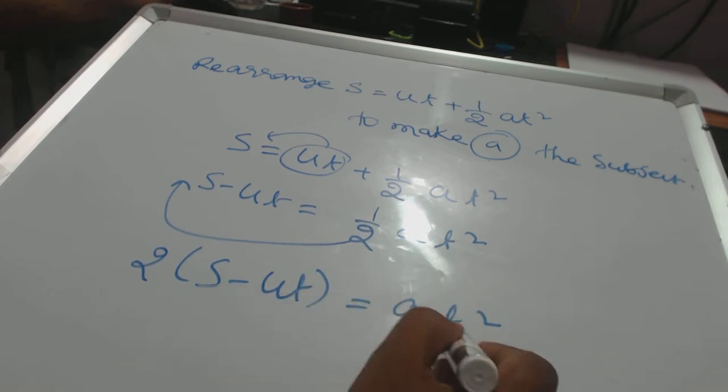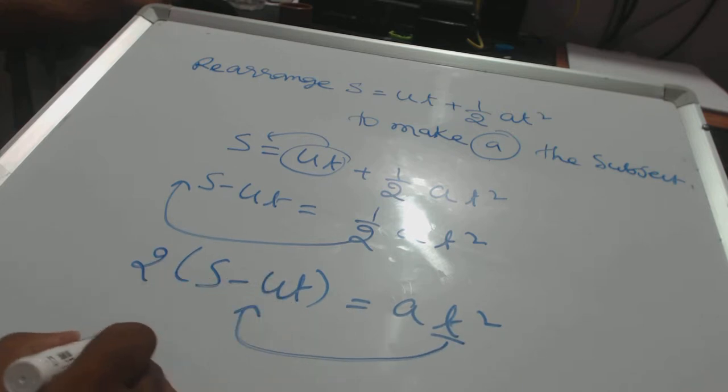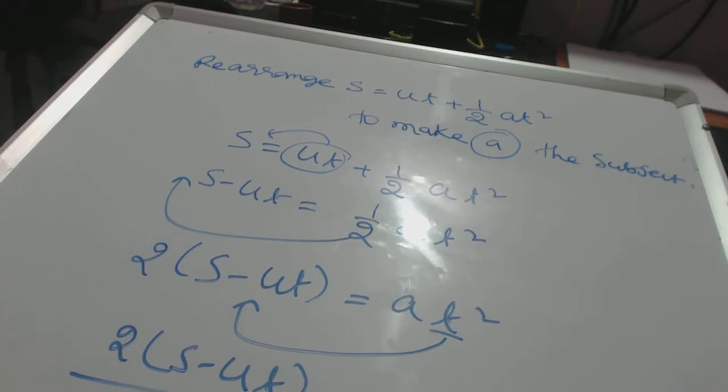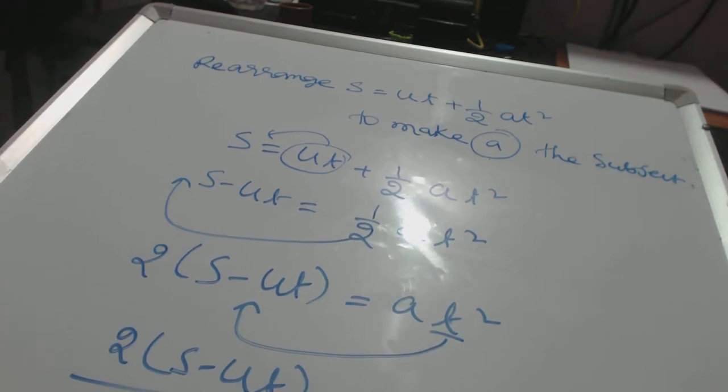Now you want a, so divide both sides by t squared. 2 times s minus ut divided by t squared equals a. So this is the formula, this is making a the subject of the formula.